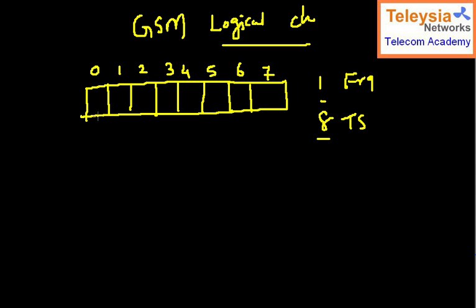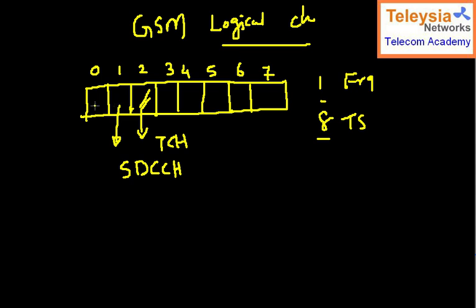What is a logical channel? A logical channel means I may use time slot number two for some traffic purpose — then I am sending the TCH channel. I may use another time slot for the SDCCH channel. If this frequency is planned for DCCH TRX, I use time slot zero as a BCCH time slot carrying signaling.